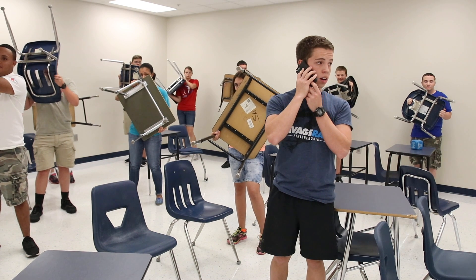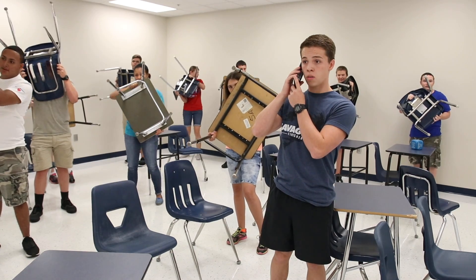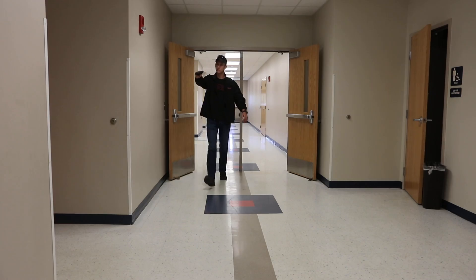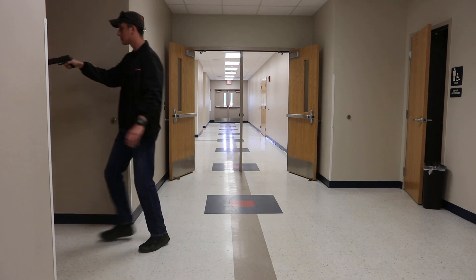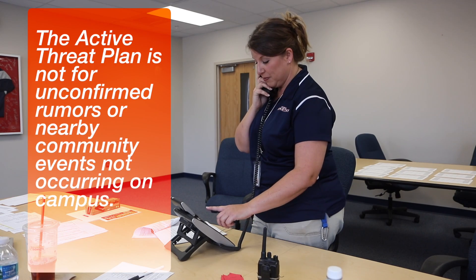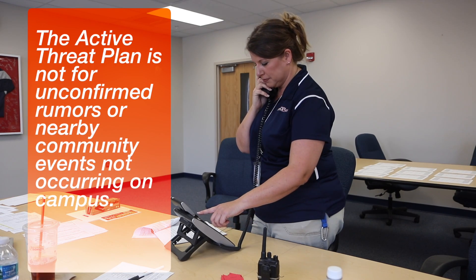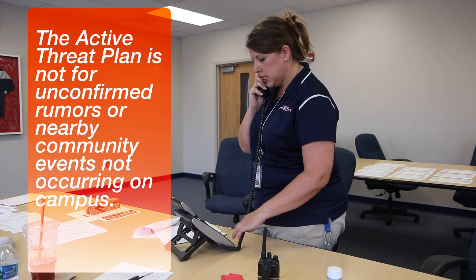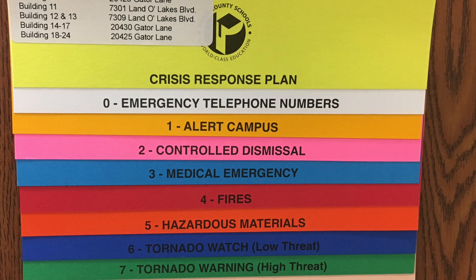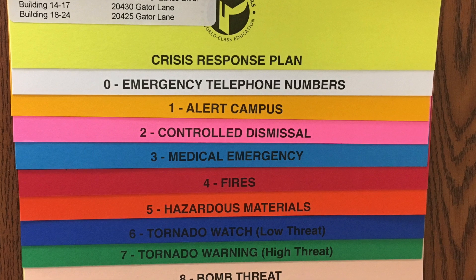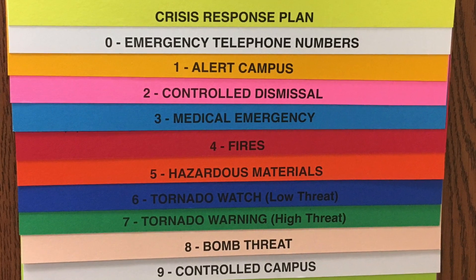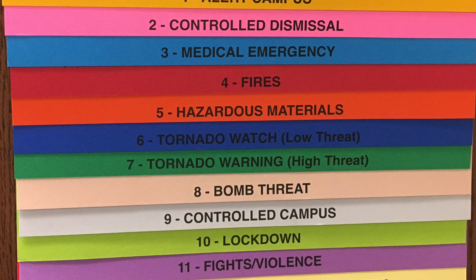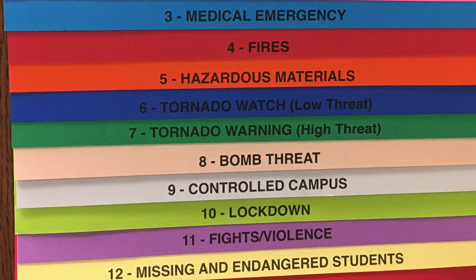It is important to remember that the Active Threat Plan, or ATP, is only activated when there is an active threat actually occurring on campus. The ATP is not for unconfirmed rumors or nearby community events not occurring on campus. These types of incidents will be managed according to the procedures outlined in the Alert Campus and/or Controlled Campus Guidelines as we already practice.